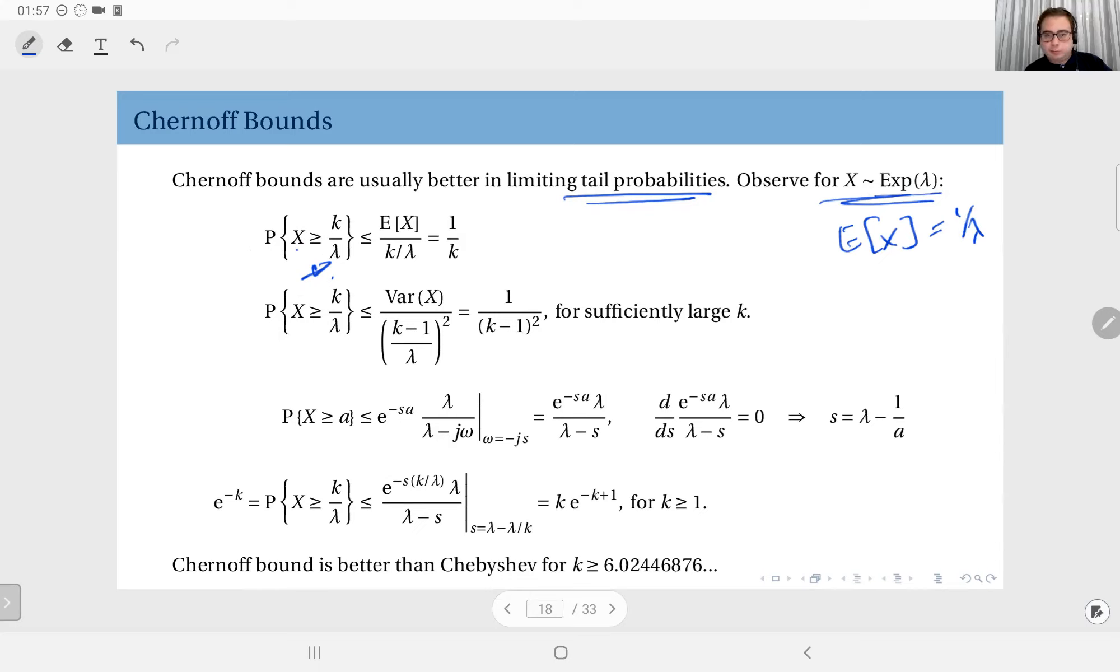is a positive value. So this is upper bounded by, using Markov inequality, expected value of X divided by this value here, which is 1 over k, because this is 1 over lambda divided by k over lambda, you get 1 over k.